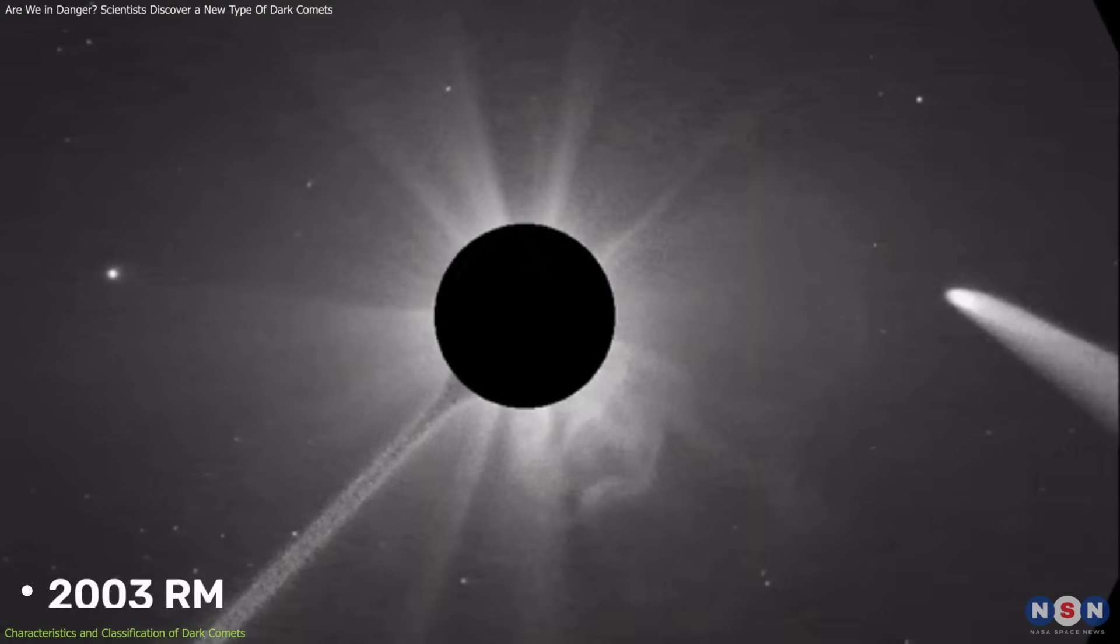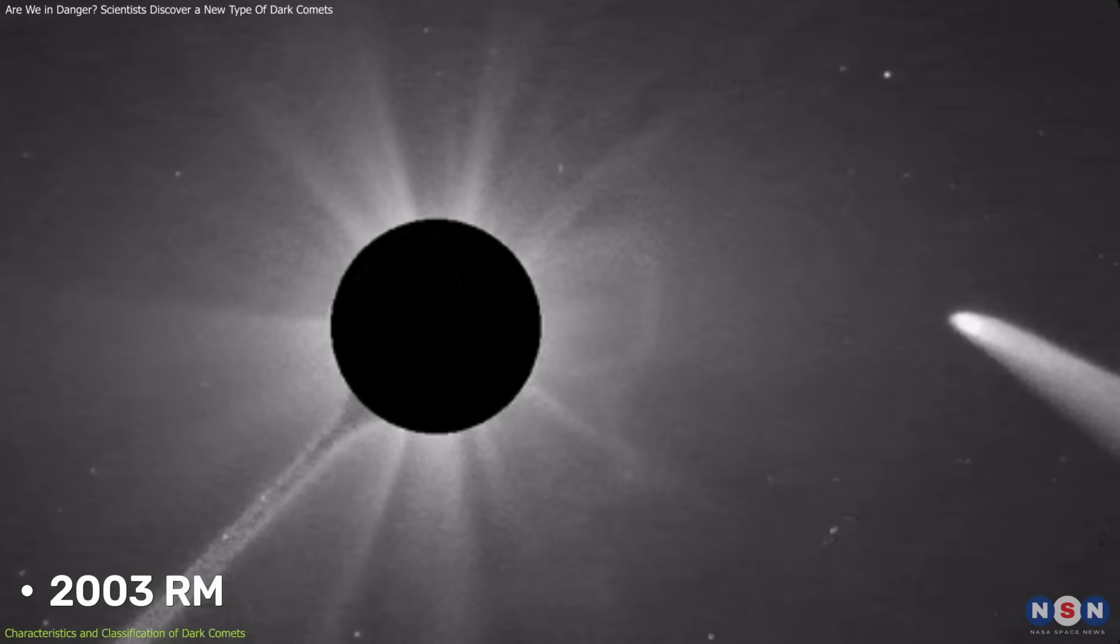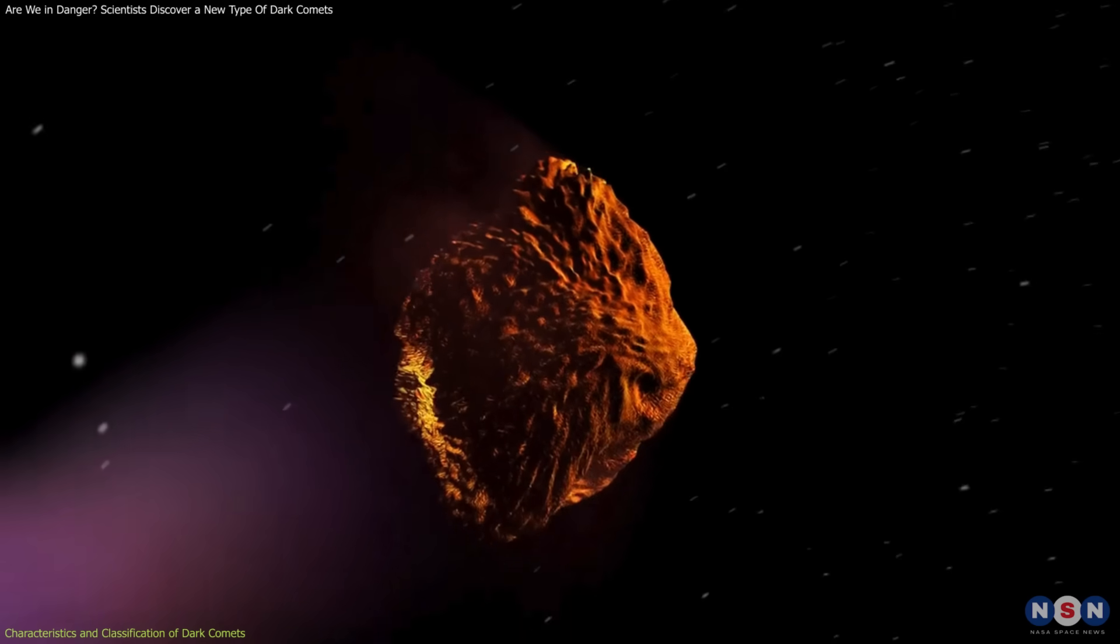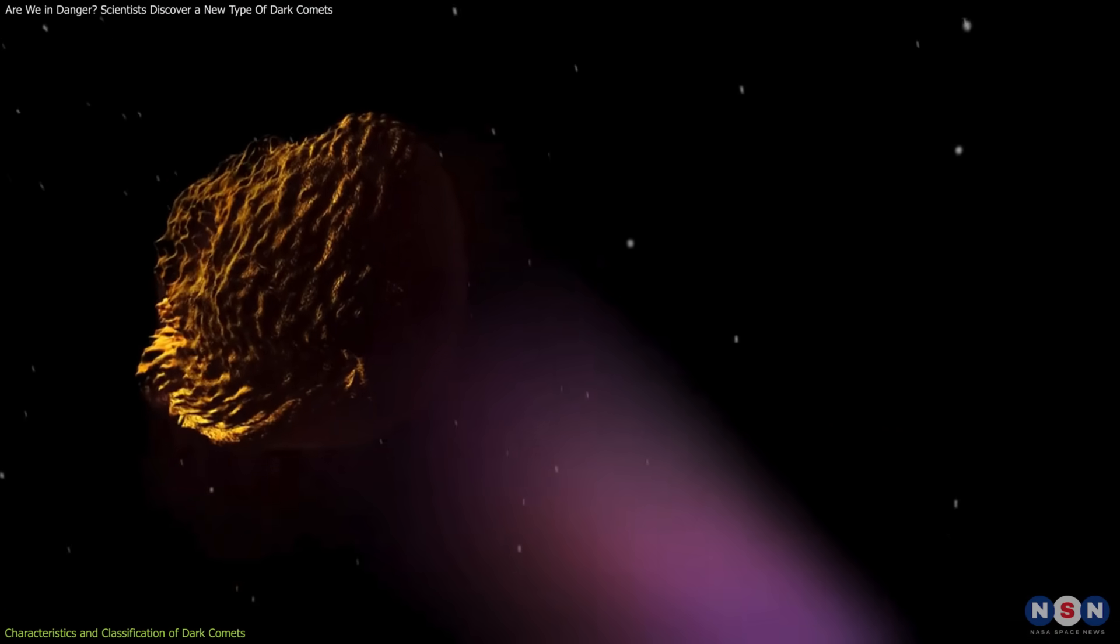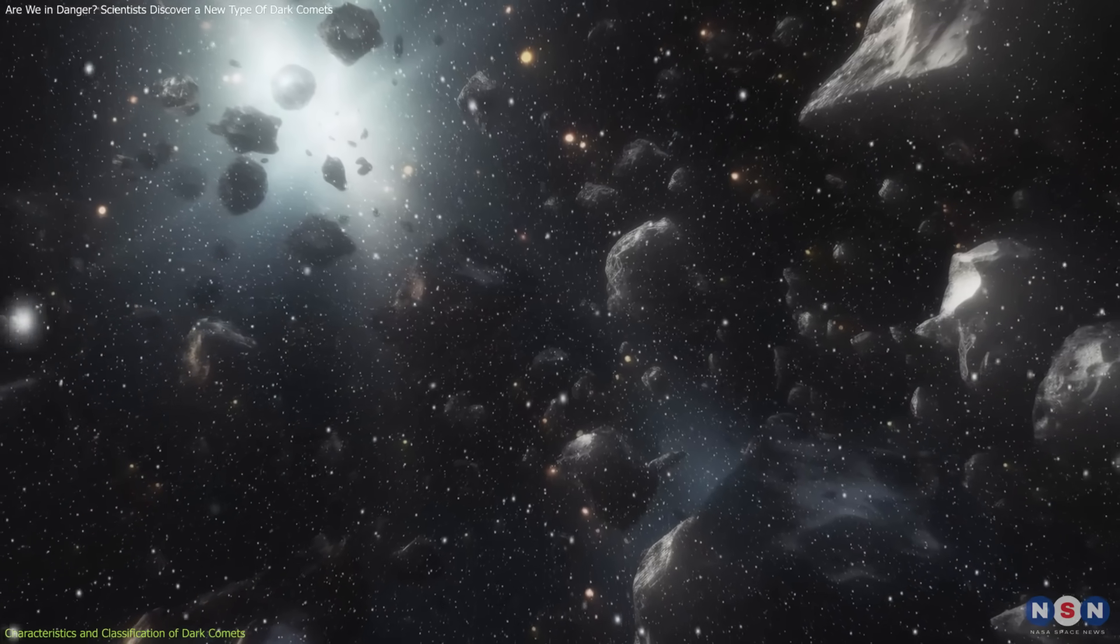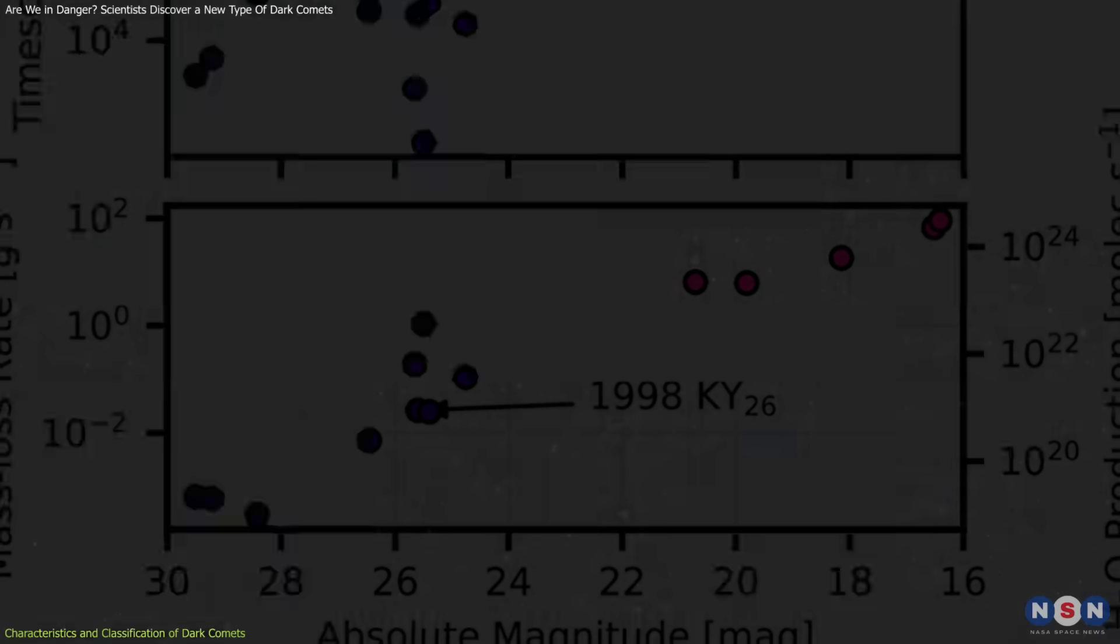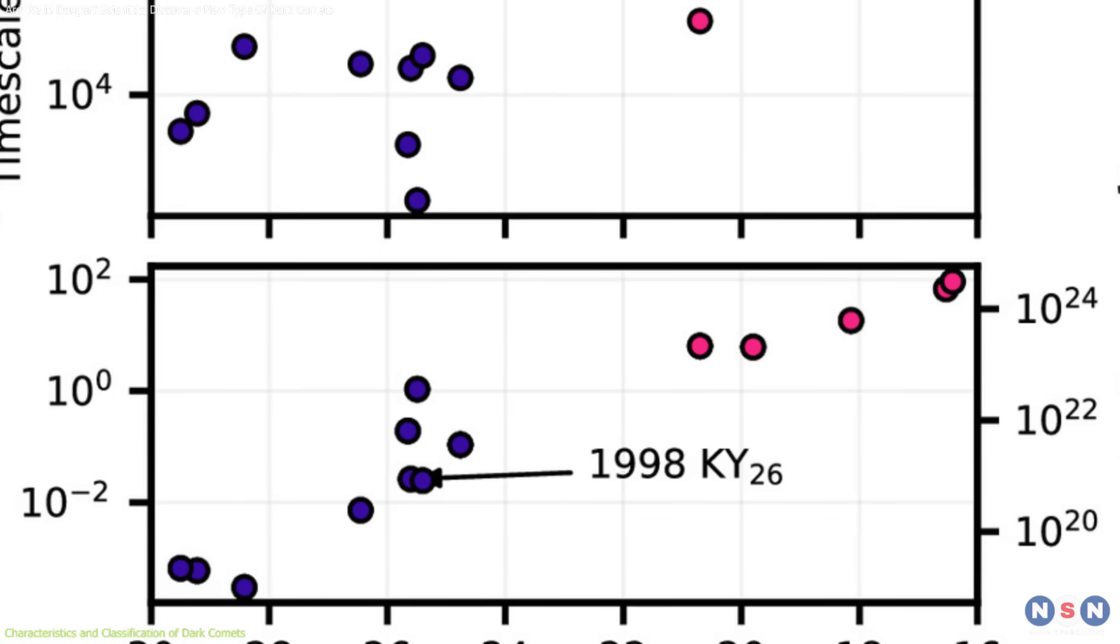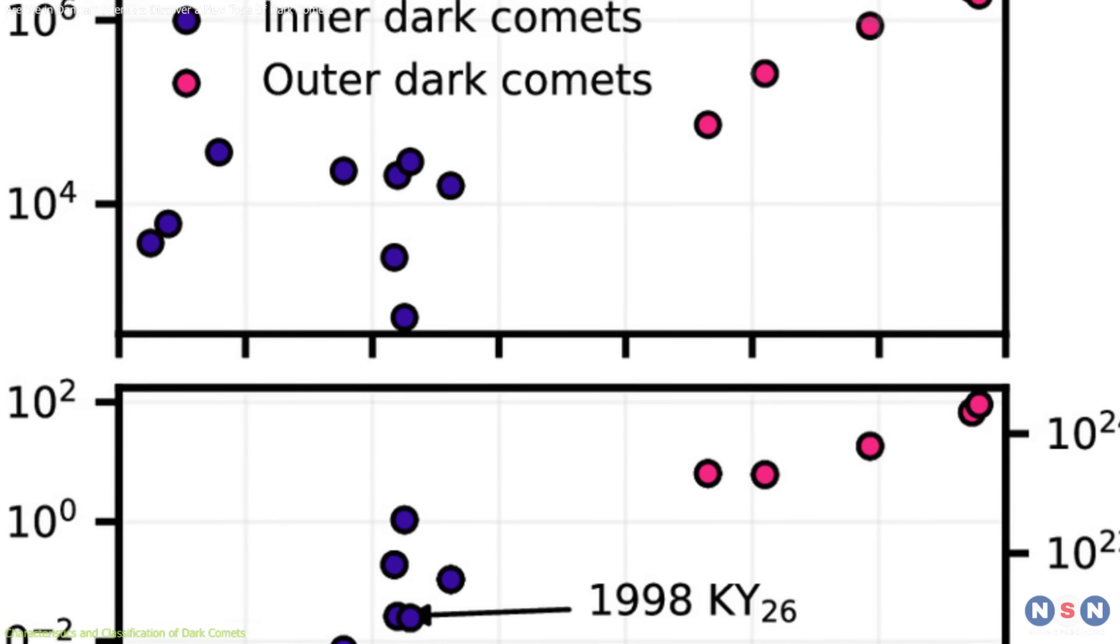Take 2003RM, for example, one of the first identified dark comets. Its orbit and subtle acceleration couldn't be explained by gravitational forces alone. This led to the realization that many more objects like it might exist, hidden in plain sight. With the discovery of 14 such objects, researchers have enough data to begin piecing together their story.